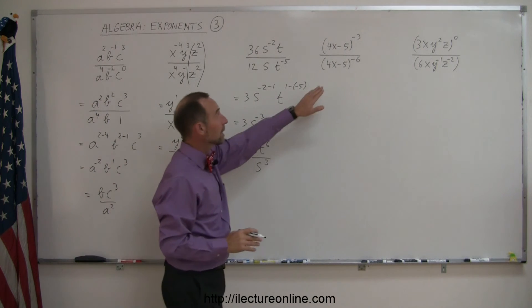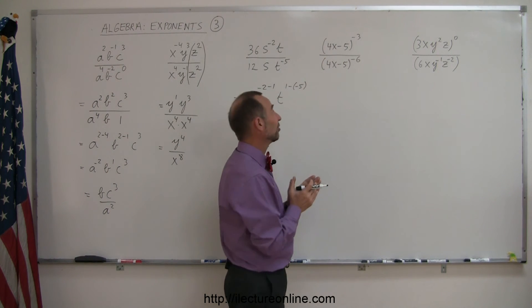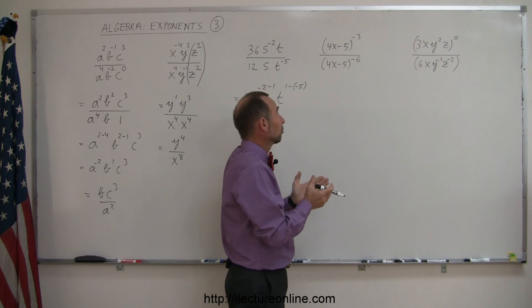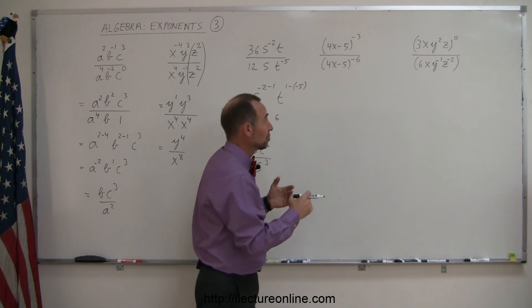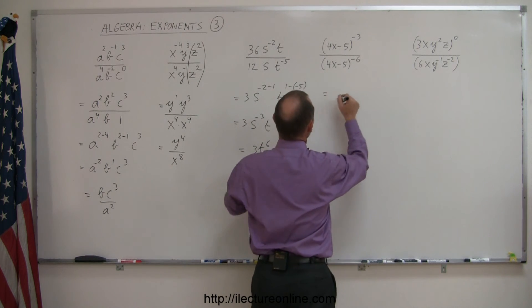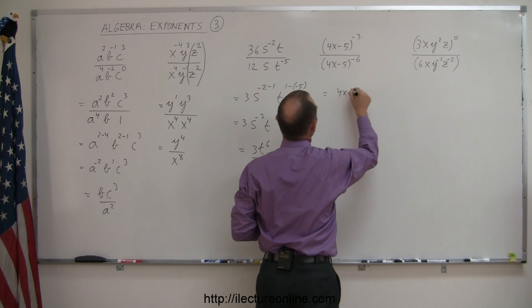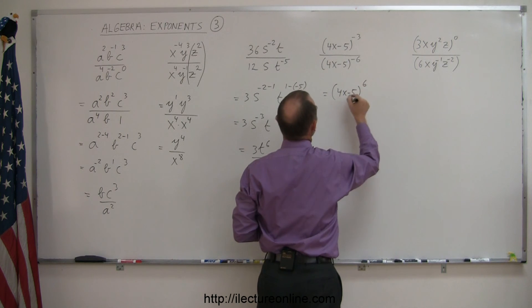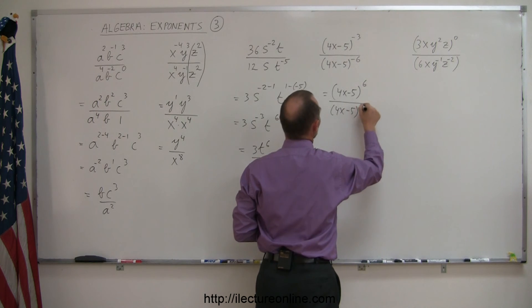Okay, on the next one here, don't be fooled by the 4x minus 5 in parentheses. You can think of that as a. So a to the minus 3 power divided by a to the minus 6 power. So using that very same principle, I can move this to the numerator, that to the denominator. So this becomes 4x minus 5 to the positive 6 power, and that becomes 4x minus 5 to the positive 3 power.